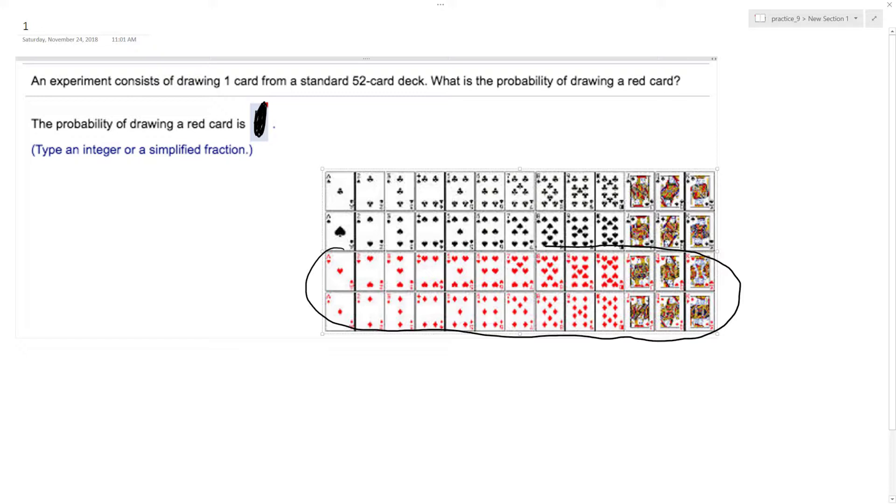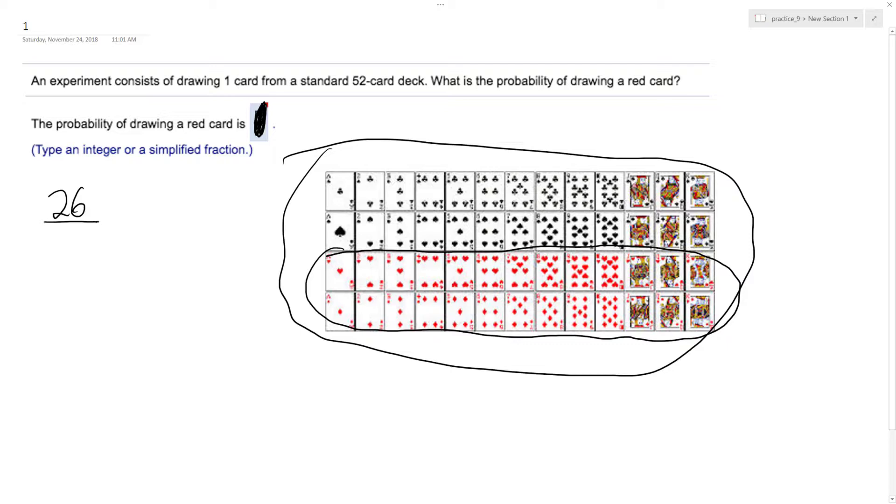And the amount of red cards are 26. And the total cards, which is all the cards included, are 52. So it's 26 over 52.